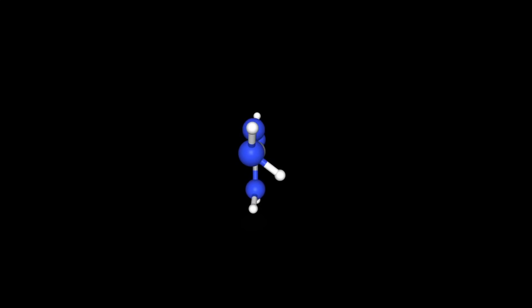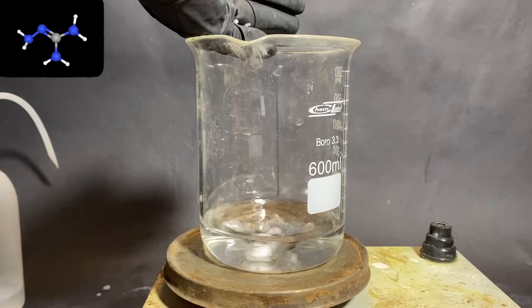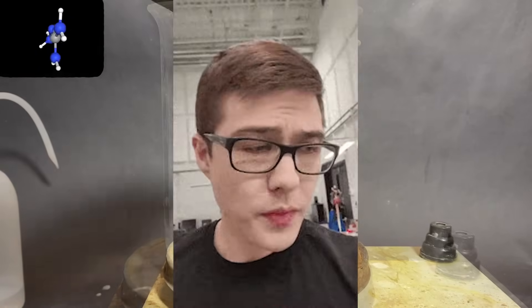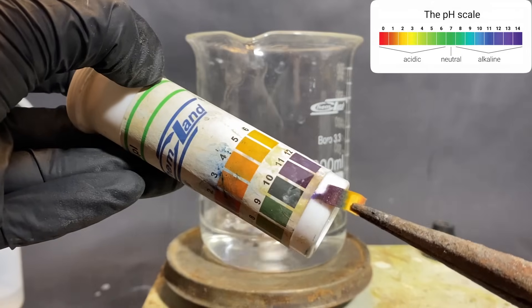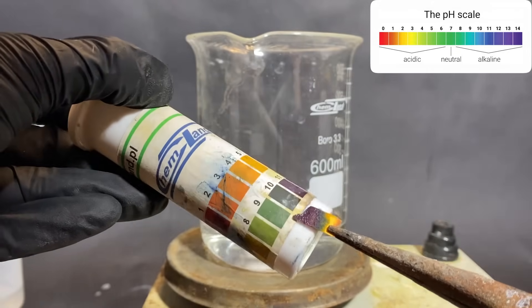This step will be making aminoguanidine, and this is actually a really in-depth process, so I'm going to turn on the nerd mode for this. First of all, to some distilled water, I added some sodium hydroxide pellets. This makes the solution highly basic at a pH of around 14.